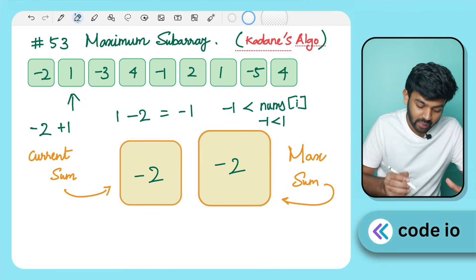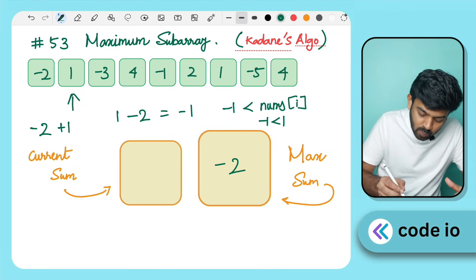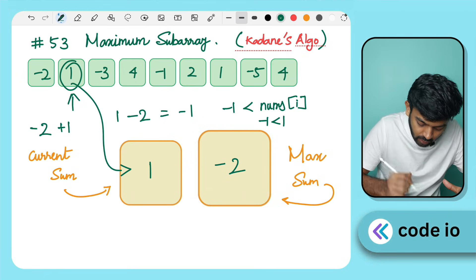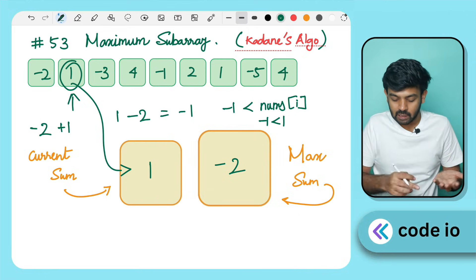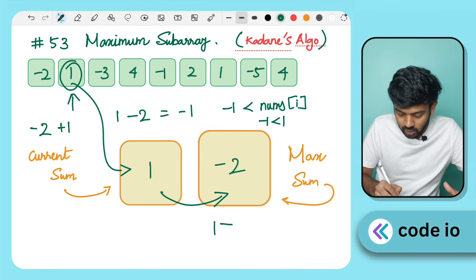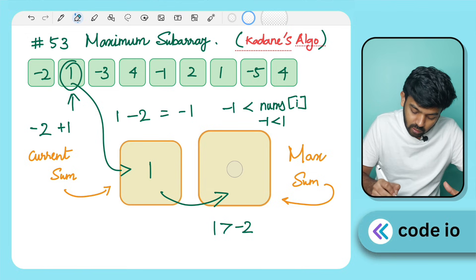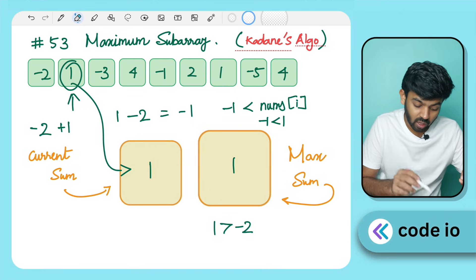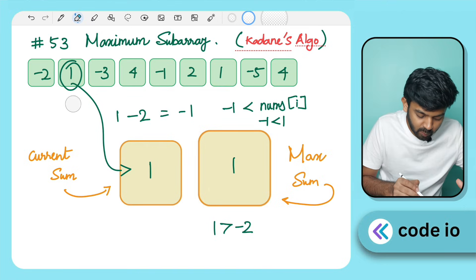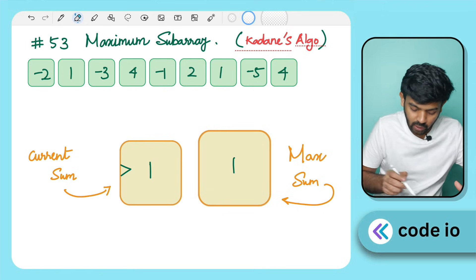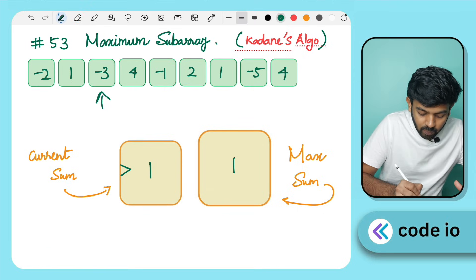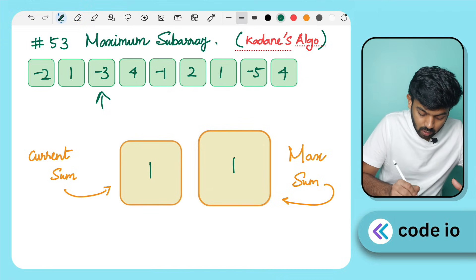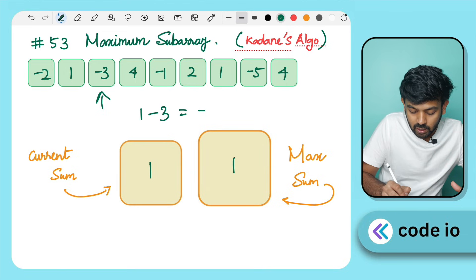We store the new current sum. As usual, we compare every iteration and update MaxSum. Is 1 greater than minus 2? Yes, so we update MaxSum to 1. In the next iteration the element is minus 3. We add minus 3 to CurrentSum: 1 plus minus 3 equals minus 2.